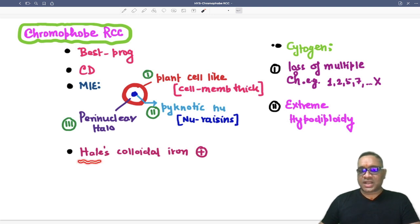And special staining can be used for Hale's colloidal iron. Hale's colloidal iron will be staining the acid mucopolysaccharides, which will be showing you a blue color.